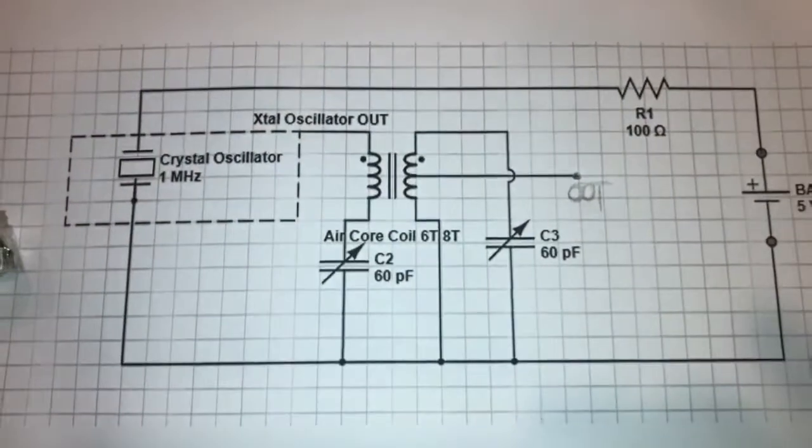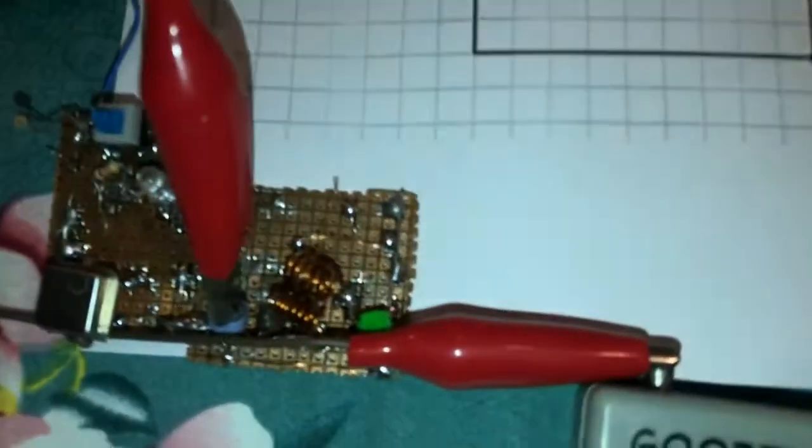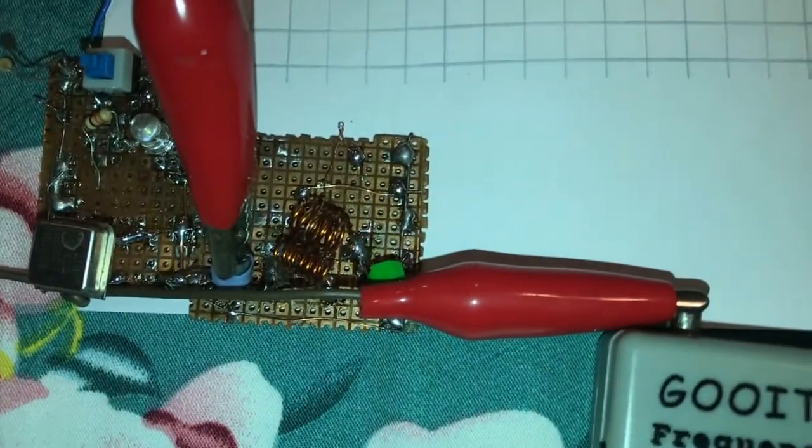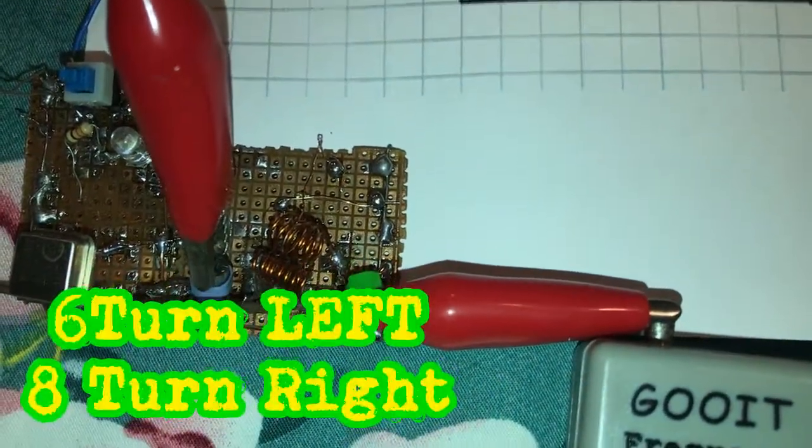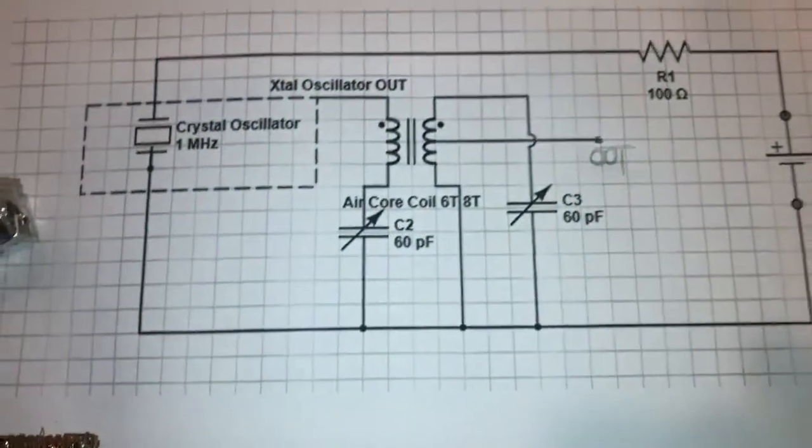This is an air core transformer, 16 turns on this side and 8 turns on the right side. The trimmers are 60 picofarads. You can go for 20 or 25 picofarads, but the output frequency will not grow more than 300 megahertz.